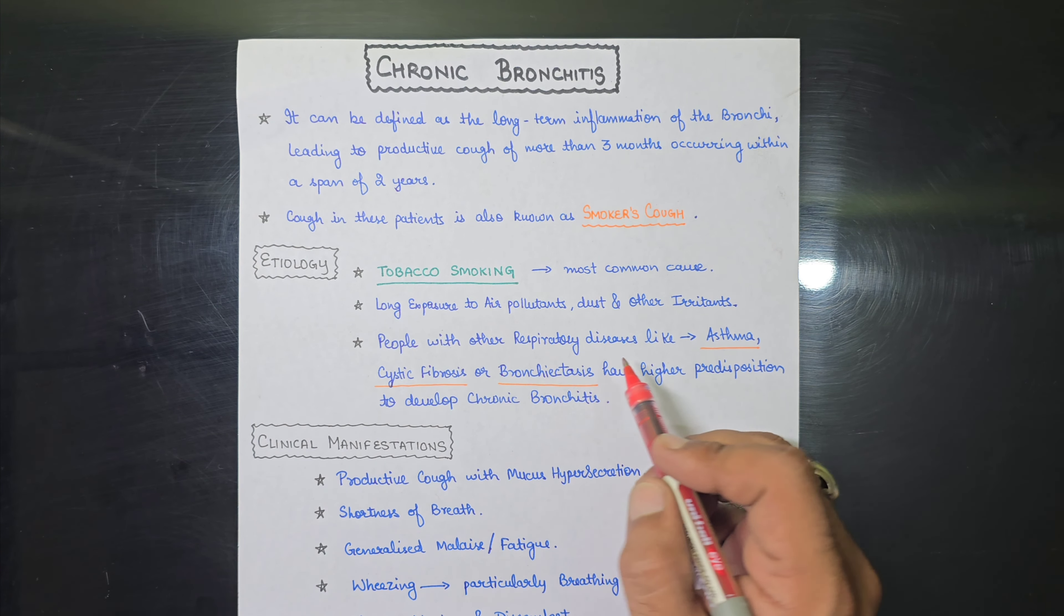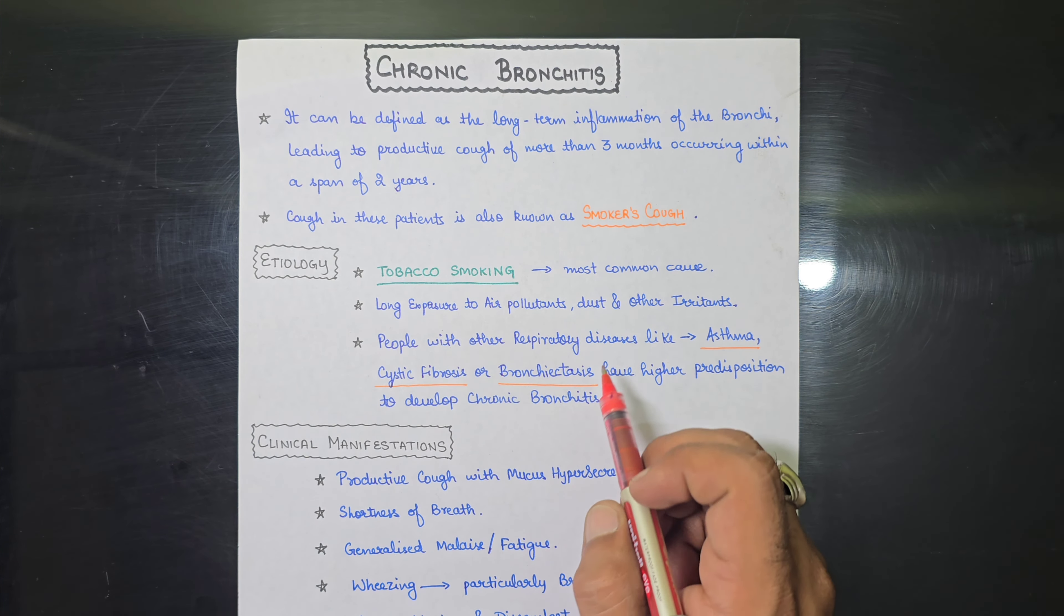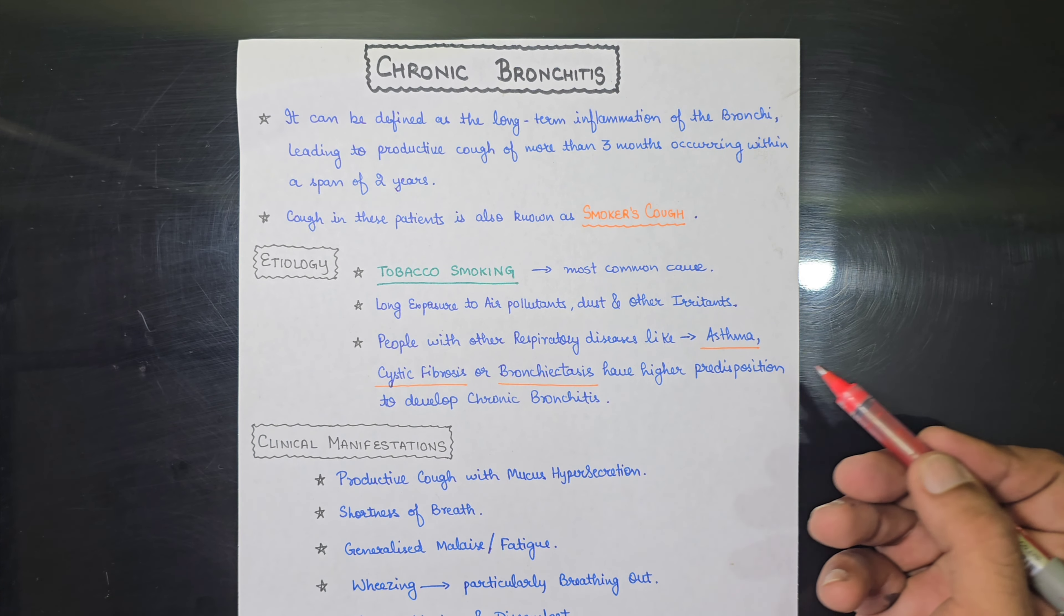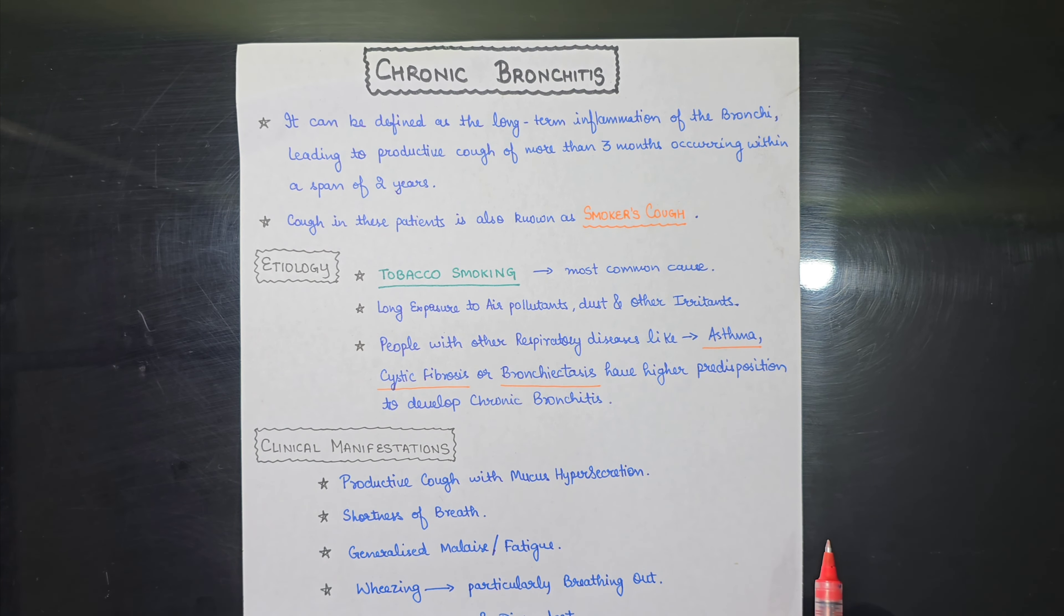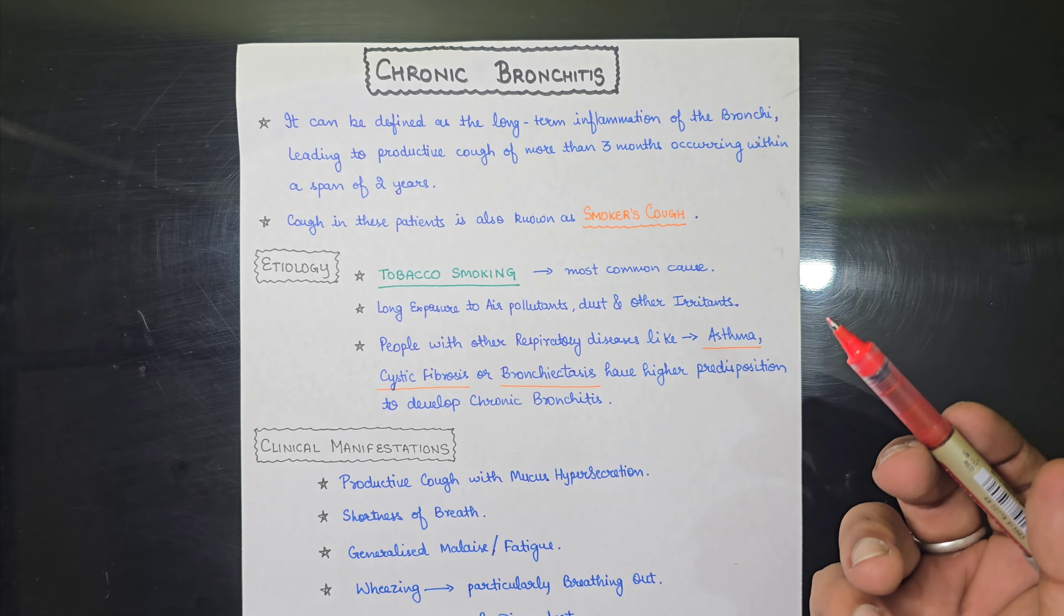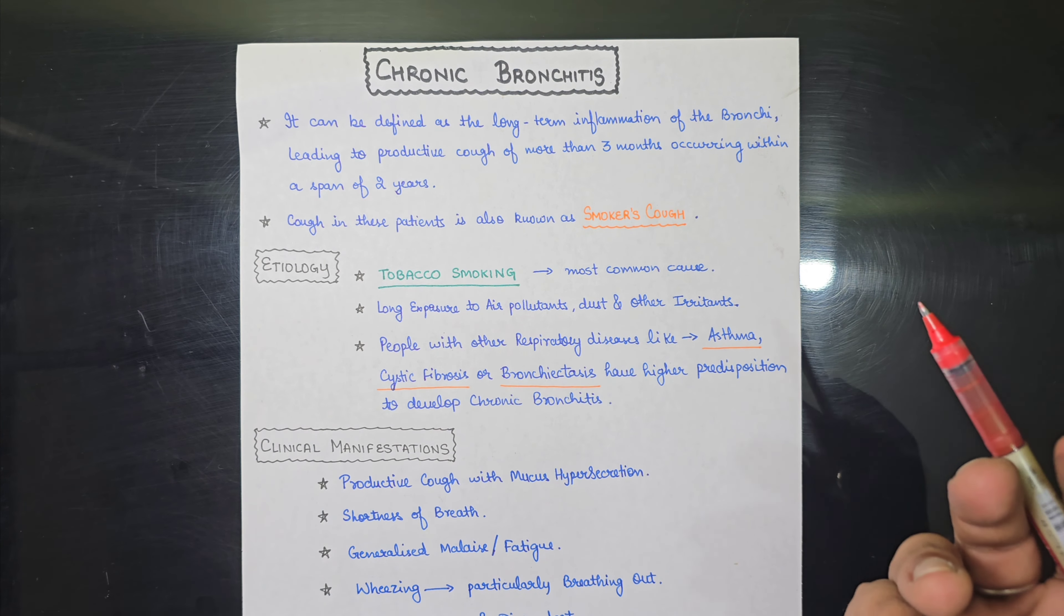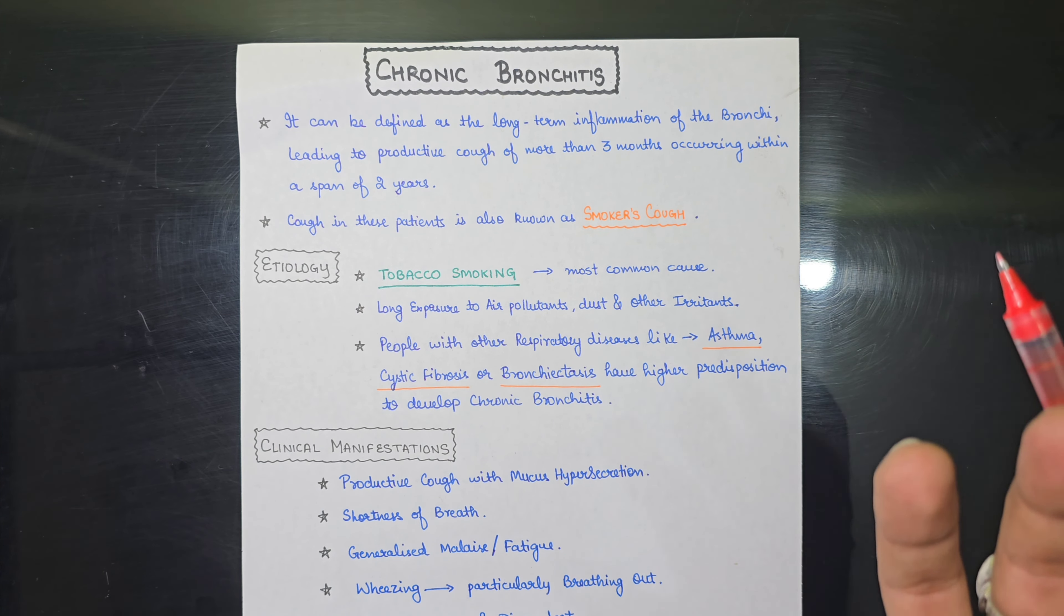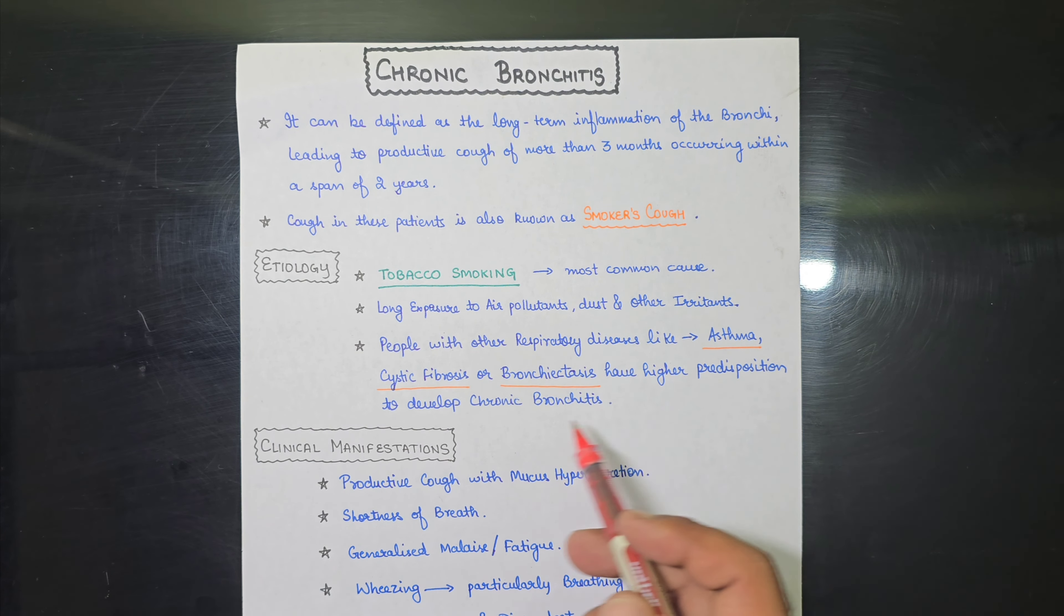Third, the people with respiratory diseases like asthma, cystic fibrosis and bronchiectasis. They basically have a higher predisposition to develop chronic bronchitis because in these patients, the lungs are already having some kind of pathology, and the alveoli and the spaces of the lungs are not healthy as per se. So they have a higher predisposition to develop chronic bronchitis.